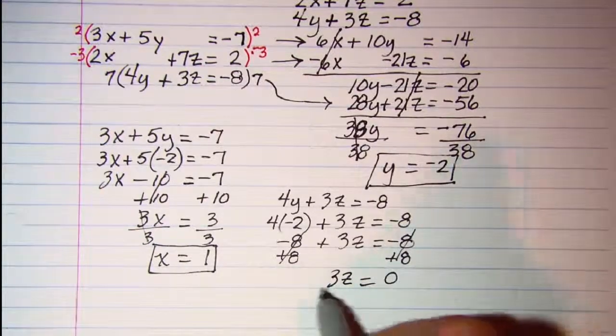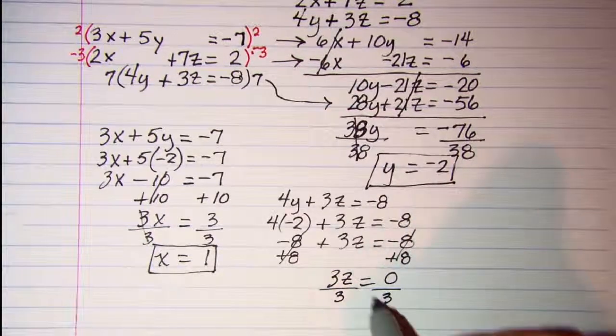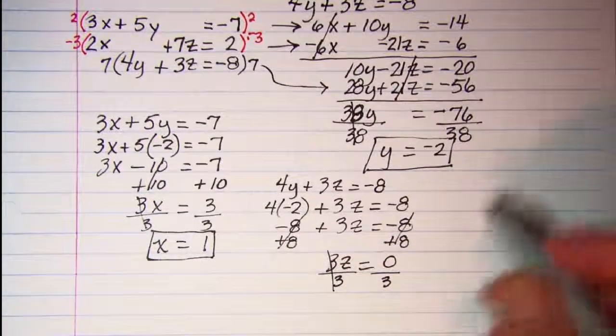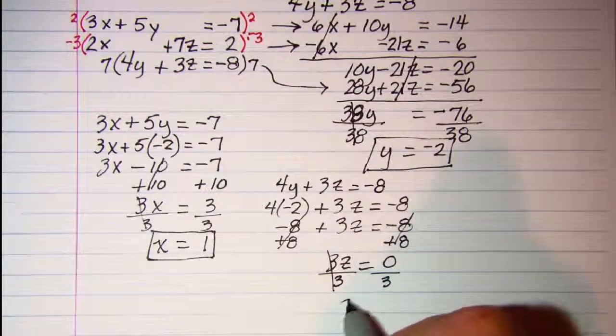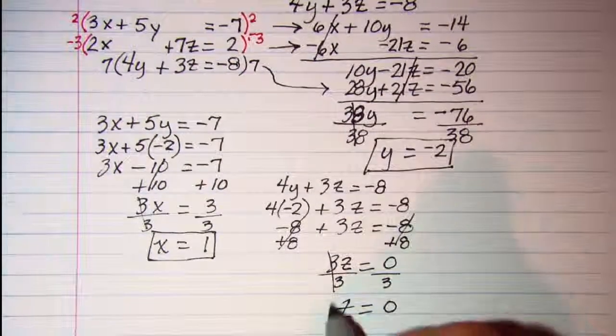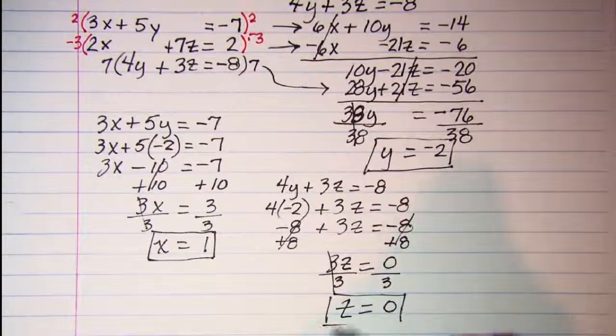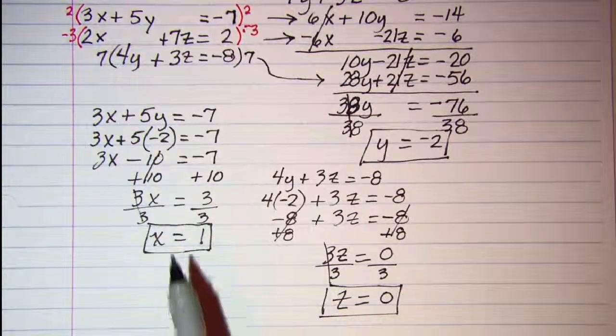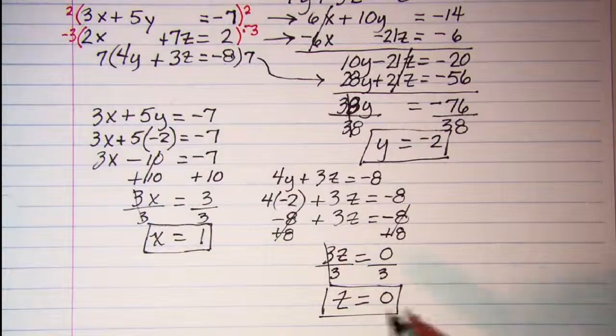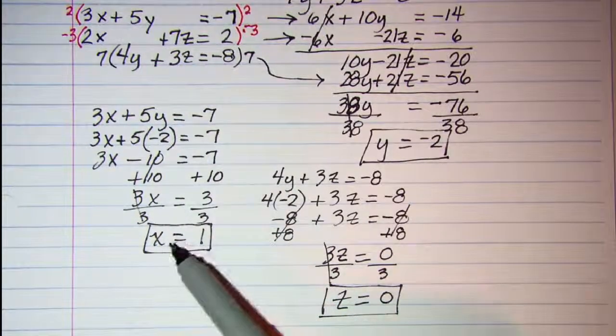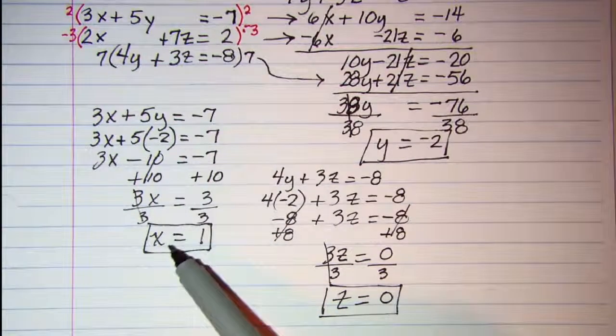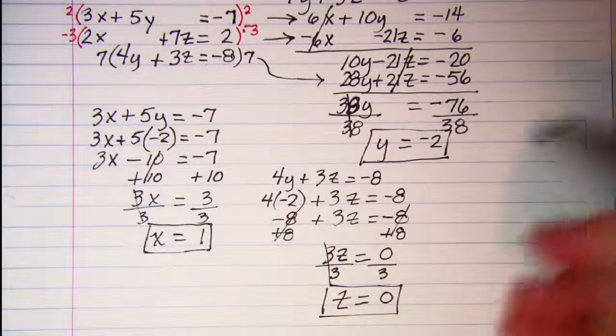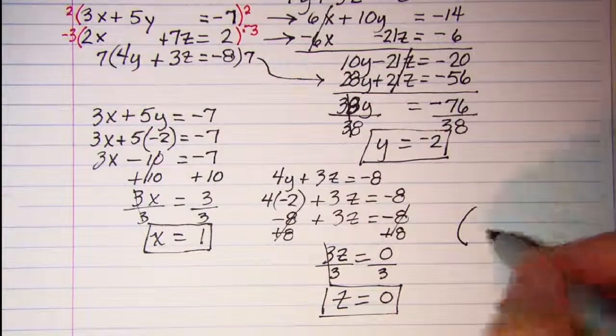It needs to be in alphabetical order of the variables, so x, y, and z. My ordered triple is (1, -2, 0).